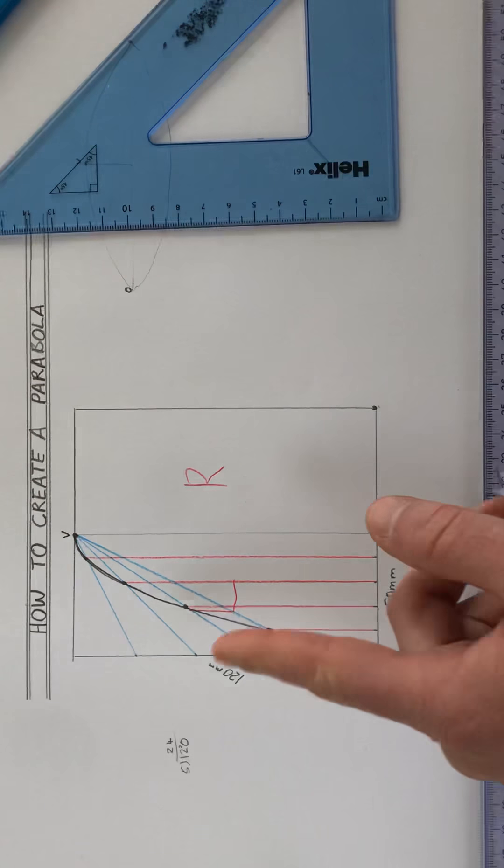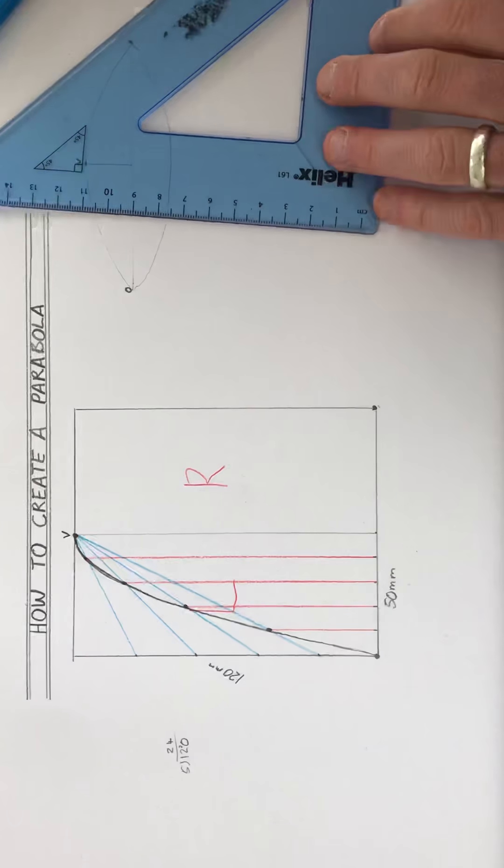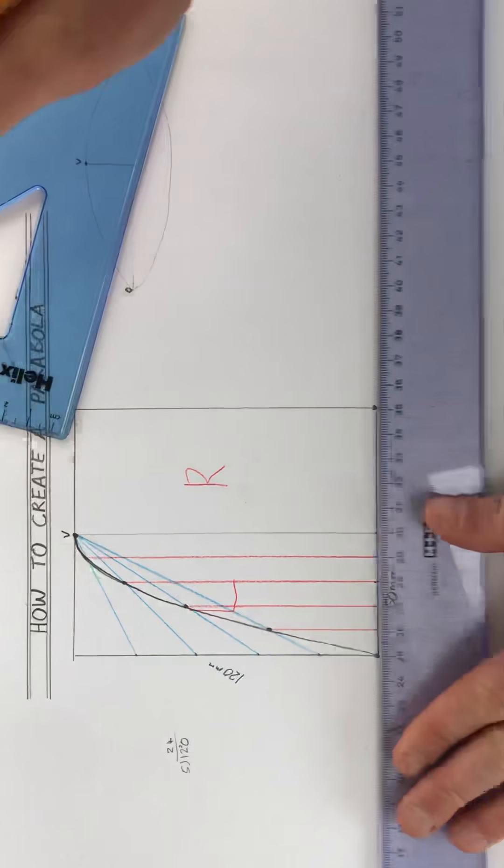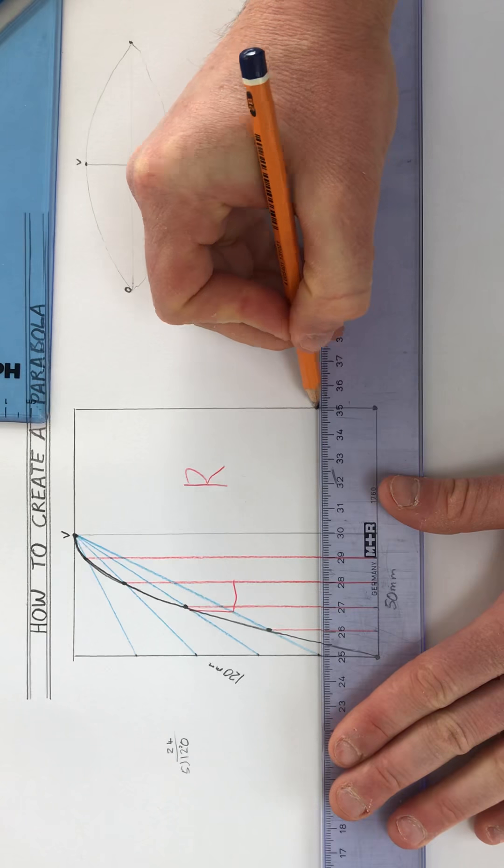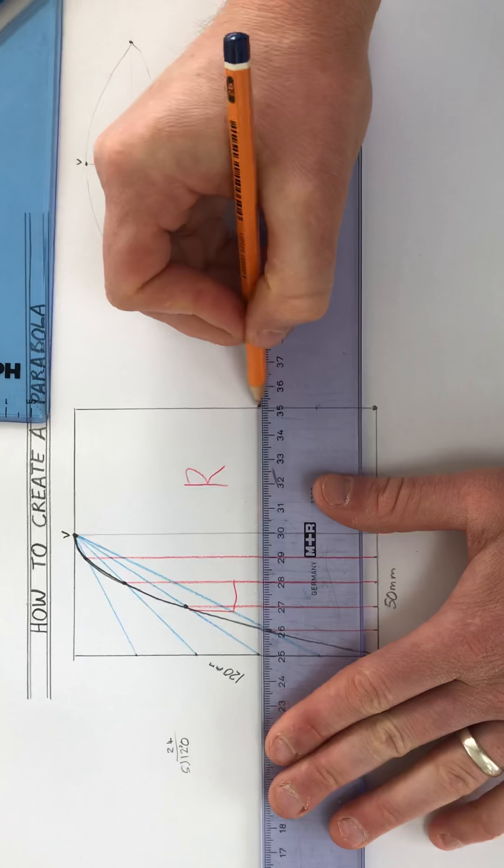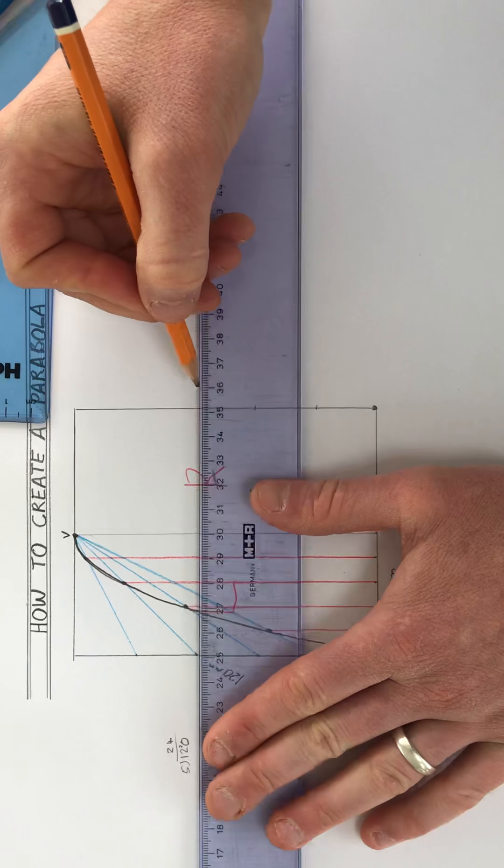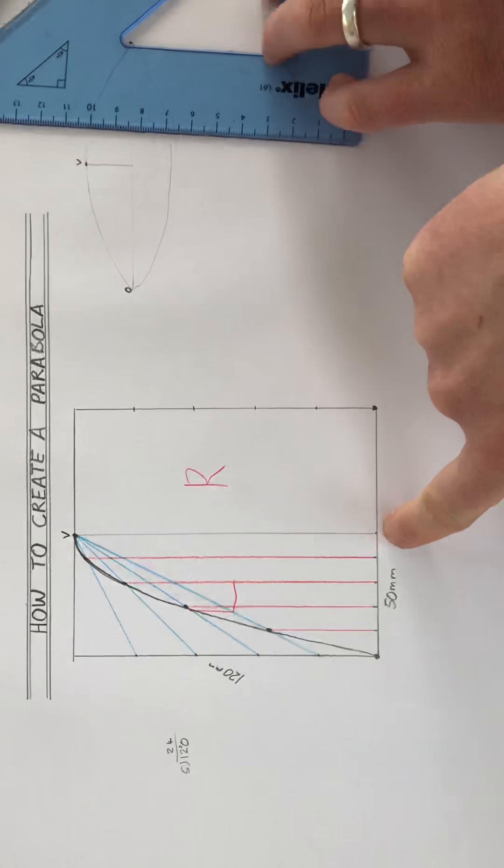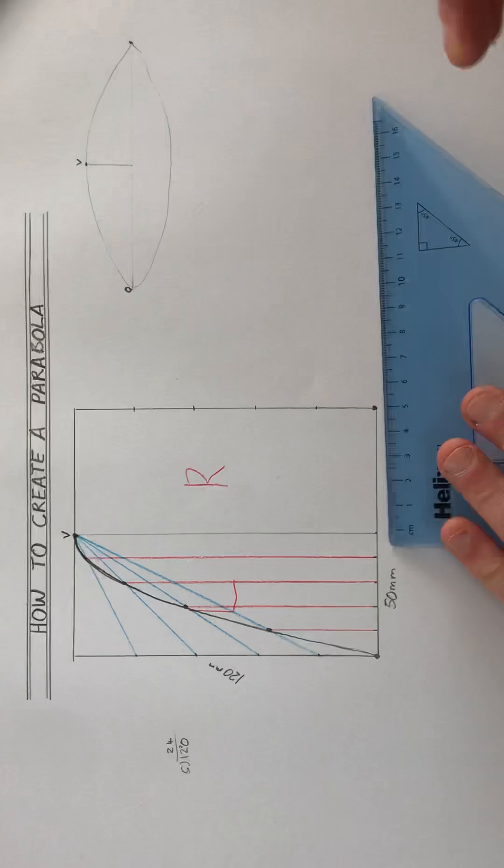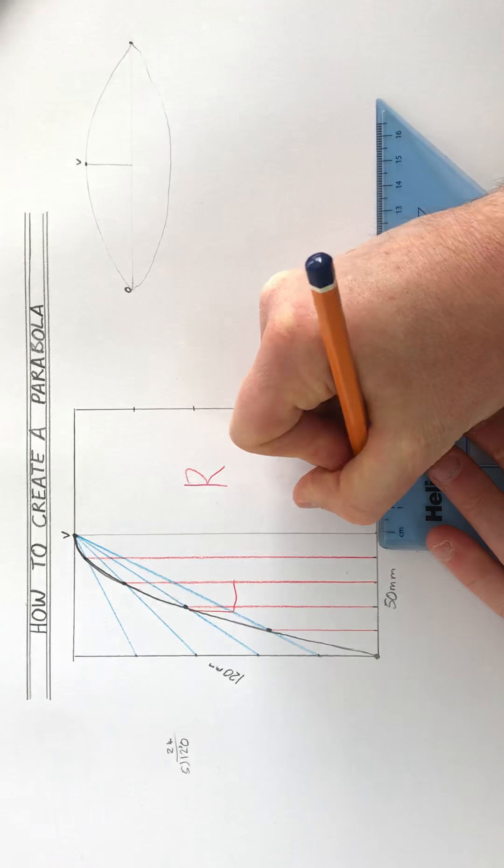Okay, so that's the left-hand side completed. I now need to do the same on the right. So again, the height was 120 divided up into 5 equal parts is every 24, so I'm just going to bring my height across. The bottom was 50 divided up into 5 equal parts, again is every centimeter.